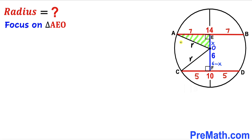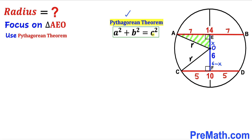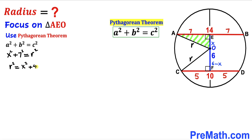Now let's focus on right triangle AEO, whose side lengths are 7, x, and lowercase r. We are going to apply the Pythagorean theorem: A² + B² = C². In our case the hypotenuse is r. Filling in the values gives us x² + 7² = r², which simplifies to r² = x² + 49. Let me call this Equation 1.